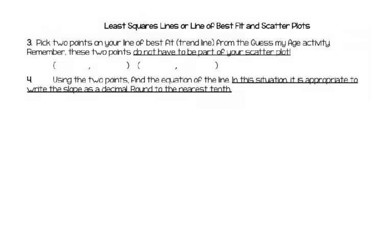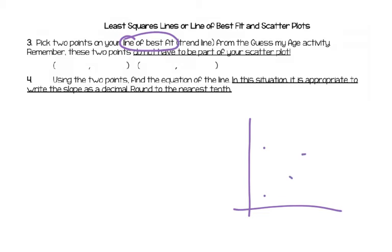Now go to your task where you did the guess my age activity and choose two points that are on your line of best fit. Your line will be different than mine, so you're probably not going to have the same two ordered pairs. Prepare for a little bit of difference. Go to your scatter plot, choose two points you can tell exactly where they are on your line, then come back. Pause the video and find those two points.